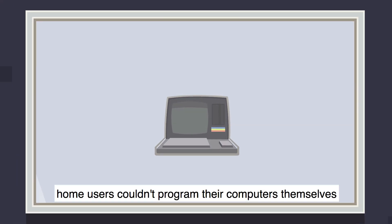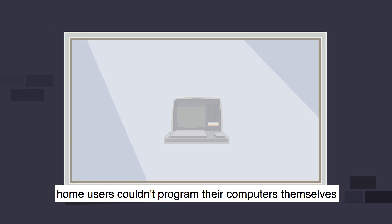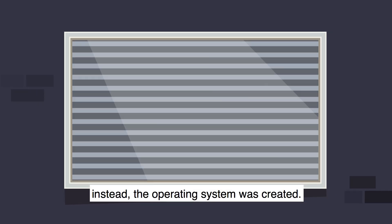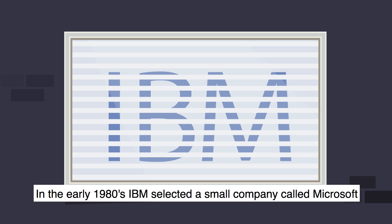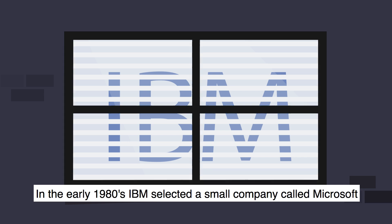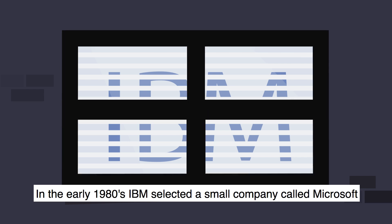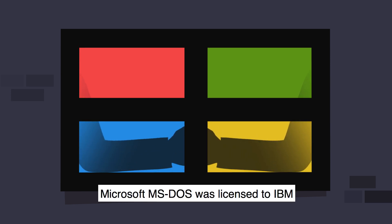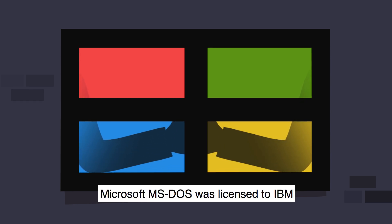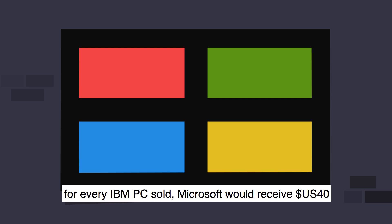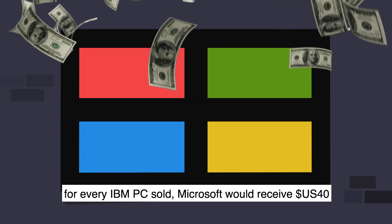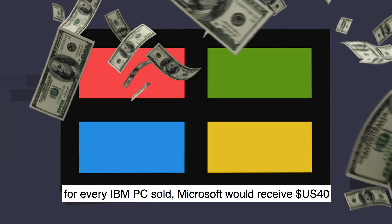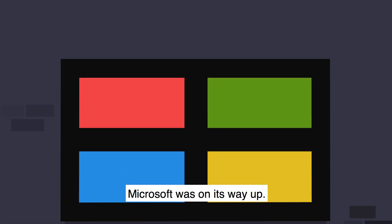Home users couldn't program their computers themselves, so the operating system was created. In the early 1980s, IBM selected a small company called Microsoft to provide their operating system. Microsoft MS-DOS was licensed to IBM, and for every IBM PC sold, Microsoft would receive 40 US dollars. Microsoft was on its way up.